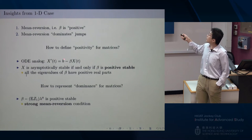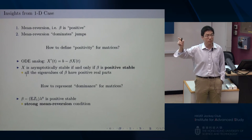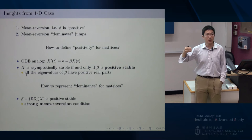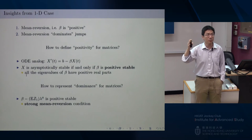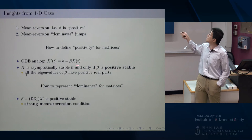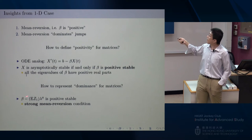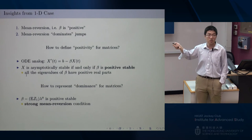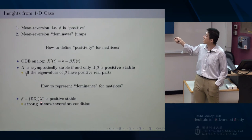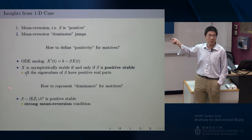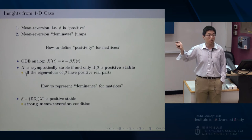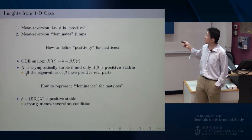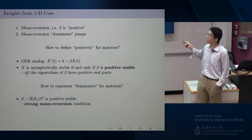For dominance in the multidimensional case, I adapt the one-dimensional condition. Beta minus the product of a column vector and lambda (also a column vector, transposed) forms a matrix, and I require this difference matrix to be positively stable. This is my definition of dominance in the multidimensional case, and I call this condition the 'strong mean reversion condition' — it's not just mean reversion, but strongly so.